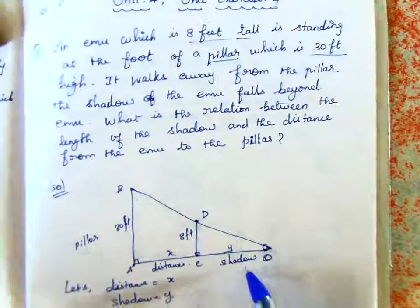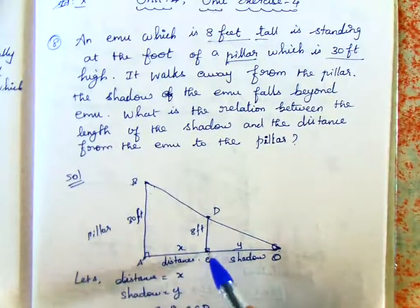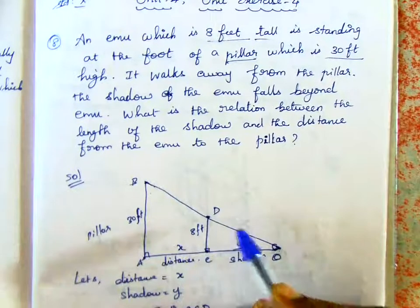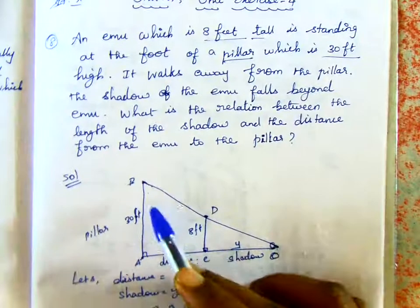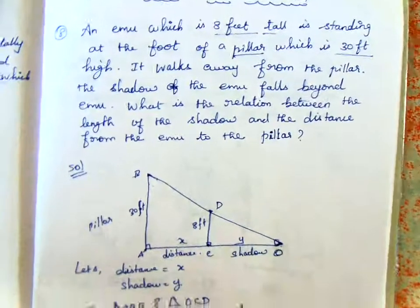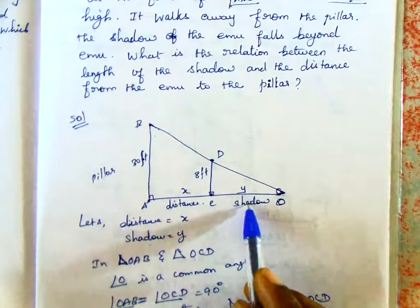So how do you do this? Now we have a diagram. AB is the pillar, CD is the emu, and the reflection point is O. After the third step, we have similar triangles. Distance is x and shadow is y.